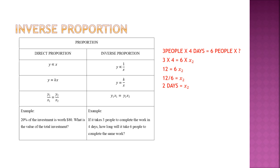There are two types of proportion. Direct proportion is what we have been doing: when one increases, the other also increases. For example, if 20% of an investment is $80, then 100% is more — both move in the same direction. Inverse proportion means one increases while the other decreases — they move in opposite directions.